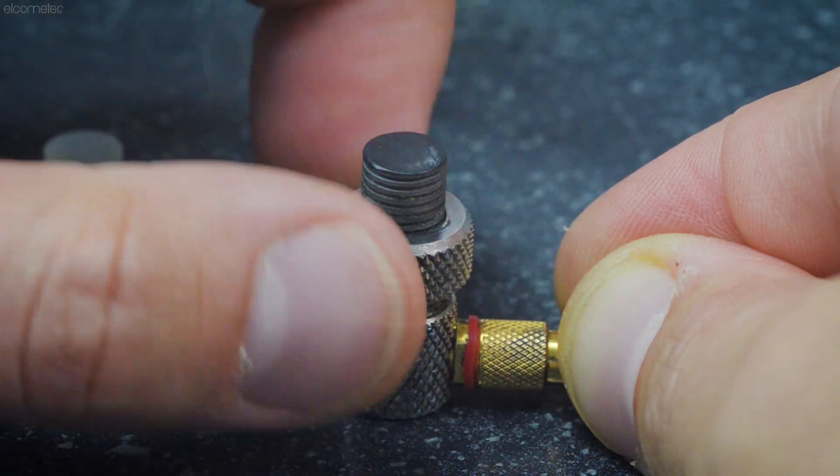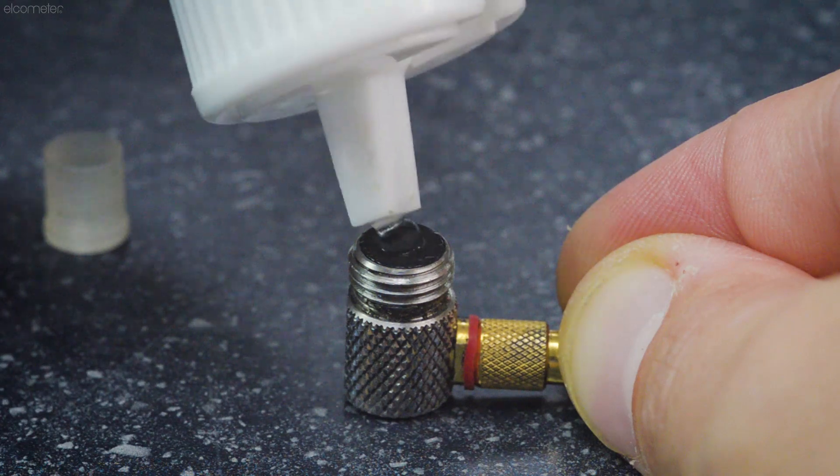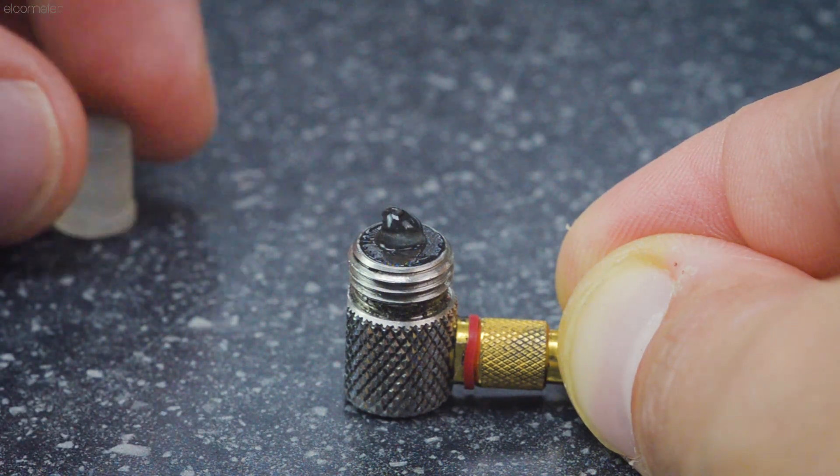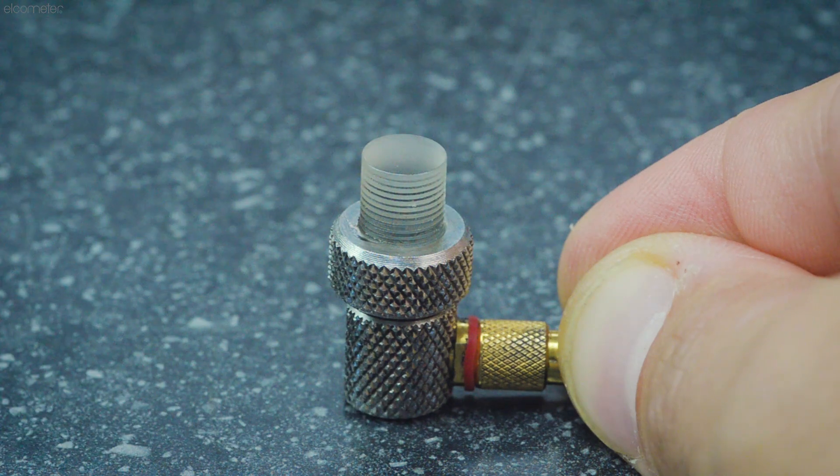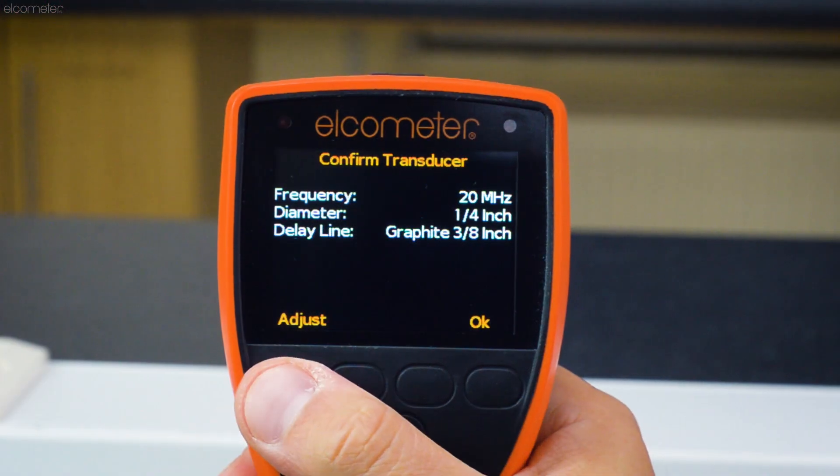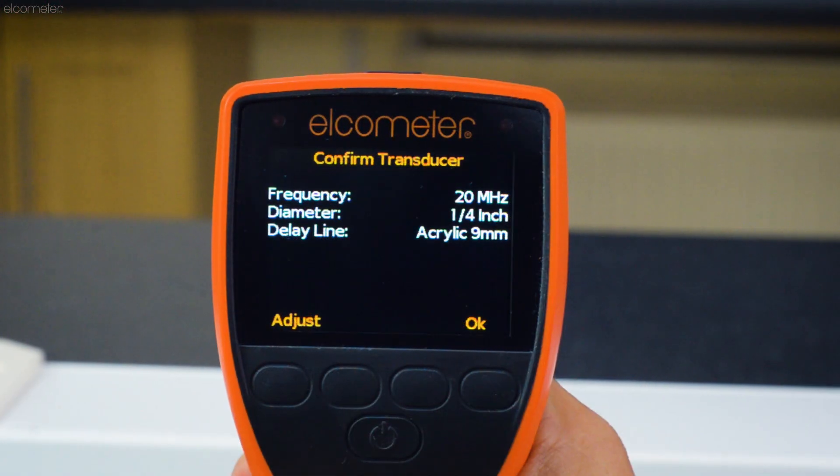Whenever you change delay lines, you should ensure there's a small amount of ultrasonic coupling between the delay line and the transducer, making sure there's no free air between them. And always remember to change the delay line setting within the gauge.